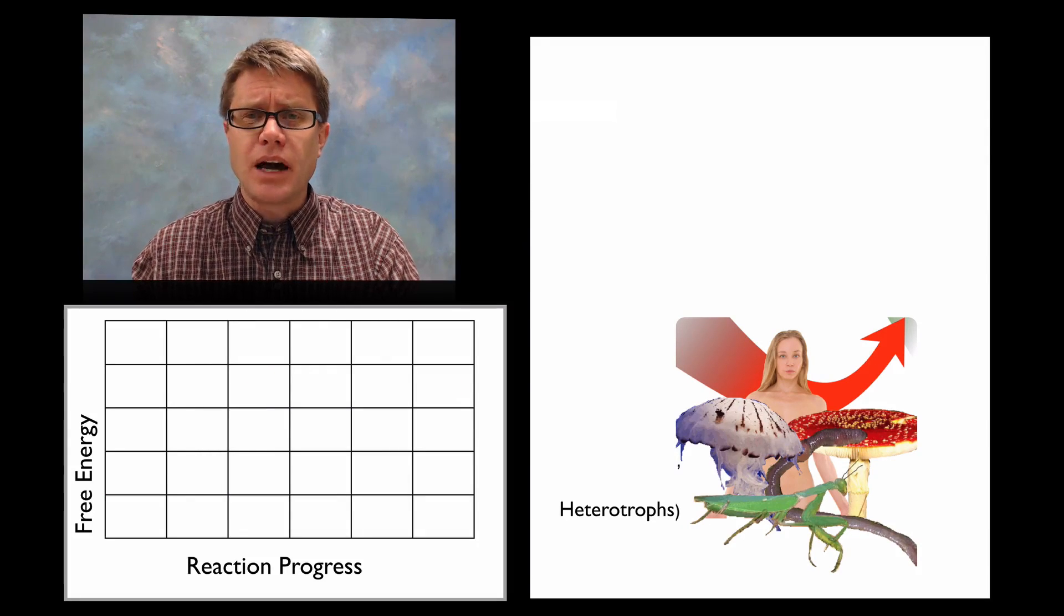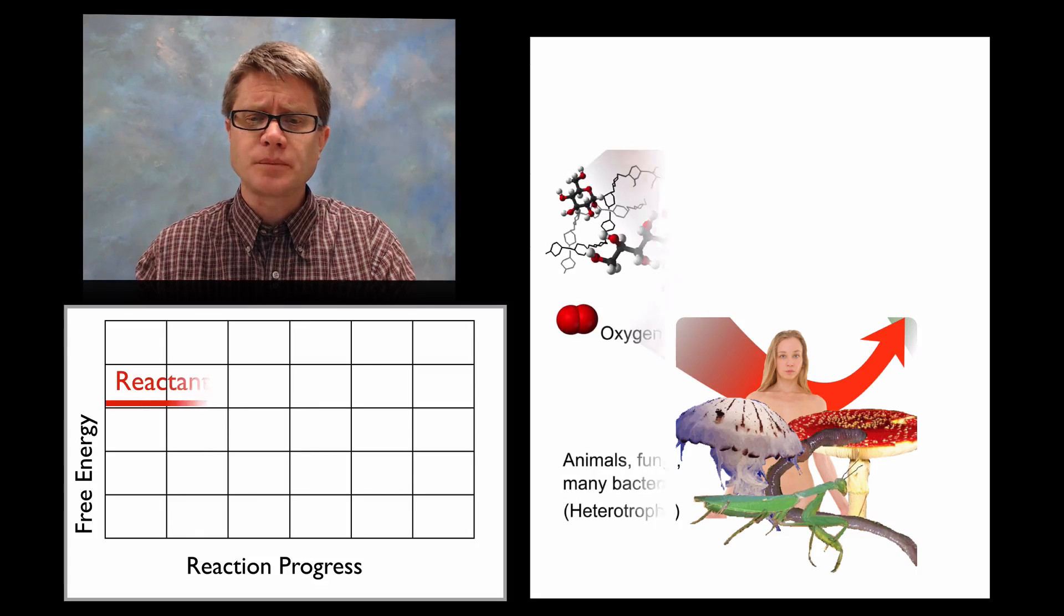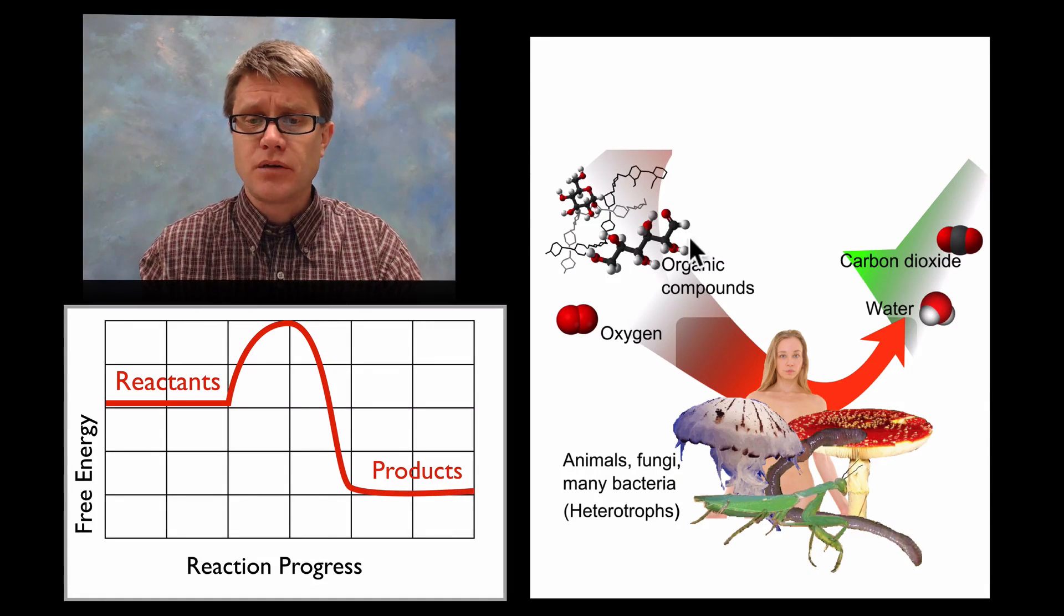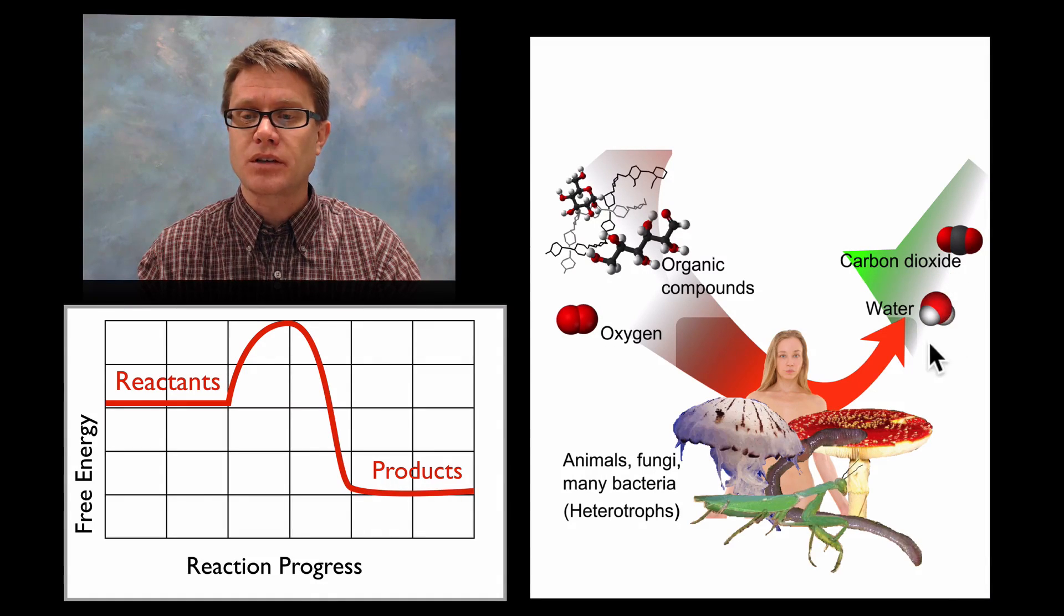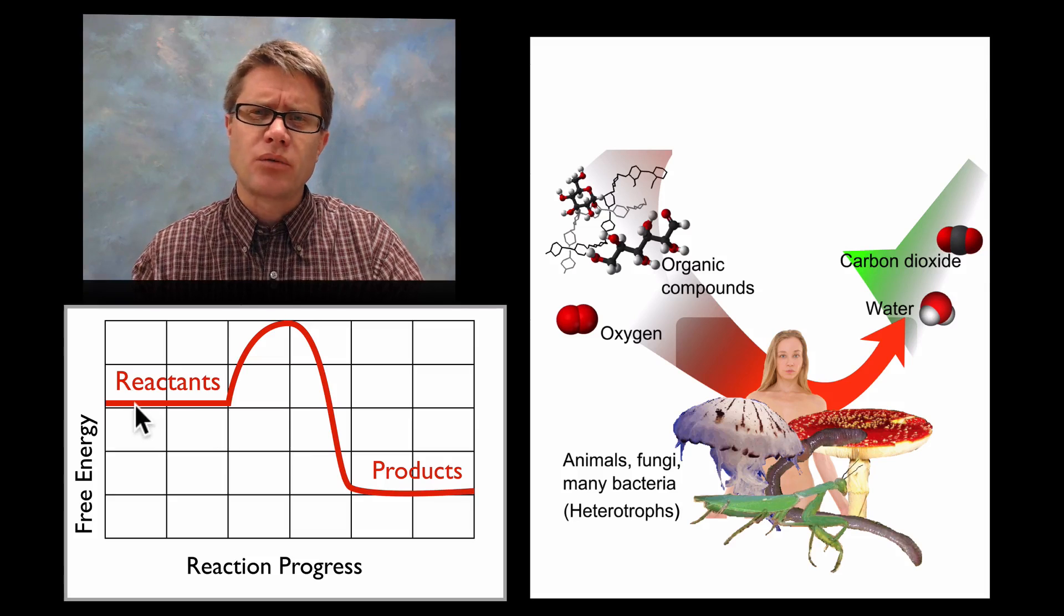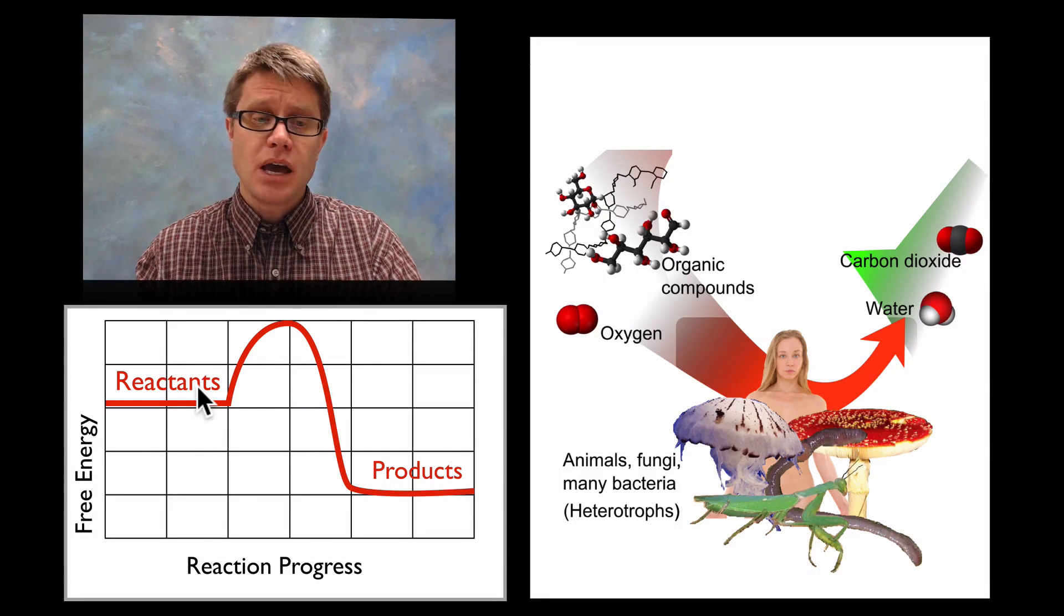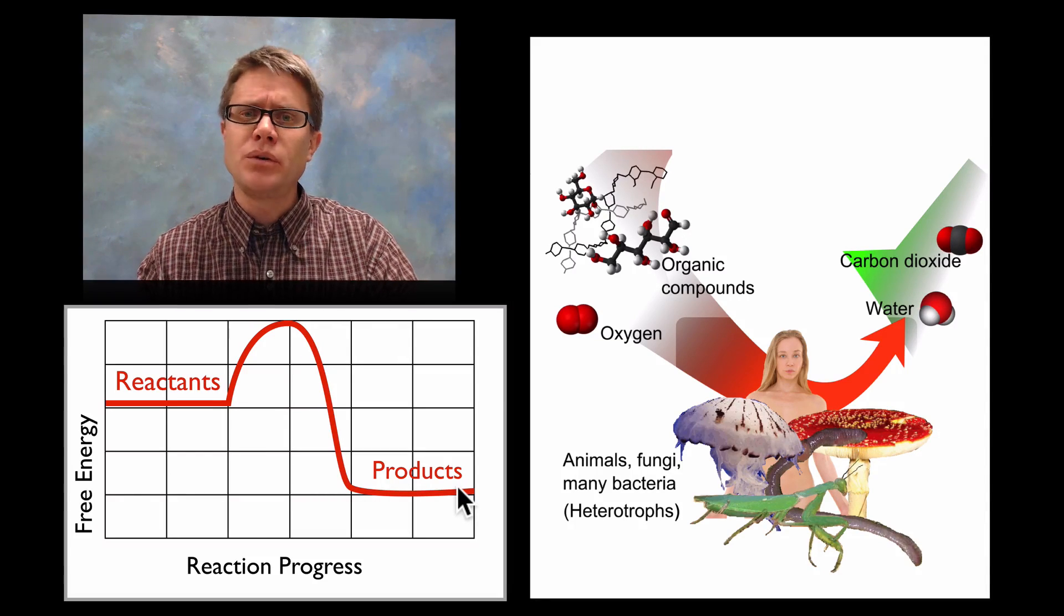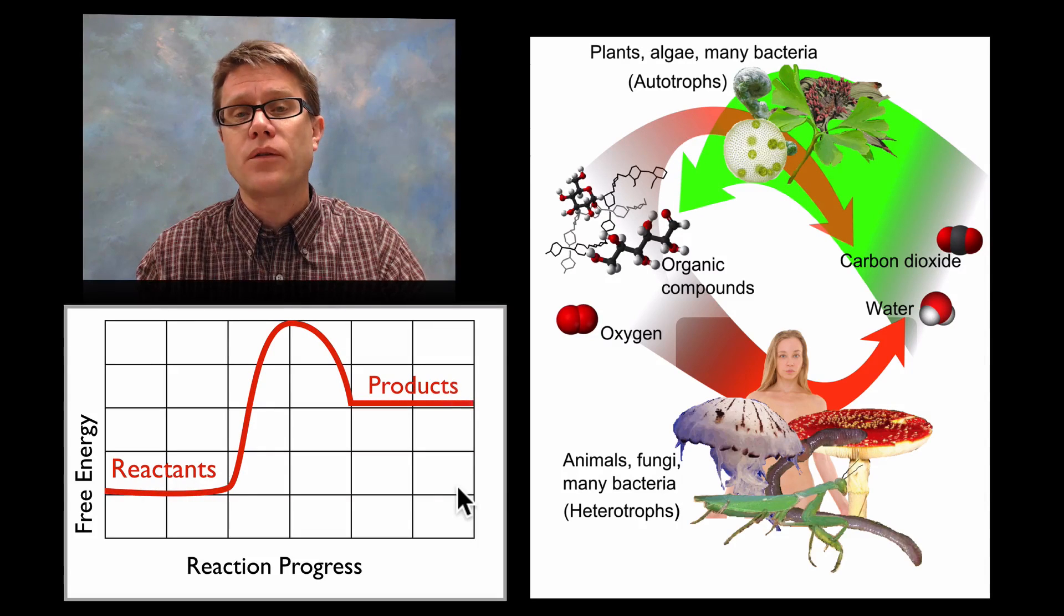If we look at life on our planet, most of us are heterotrophs. What does that mean? We take energy in our food, for example glucose. We combine it with oxygen and make carbon dioxide and water. But when we do that, the reactants, our food and oxygen, have a higher amount of free energy than the products that we produce.